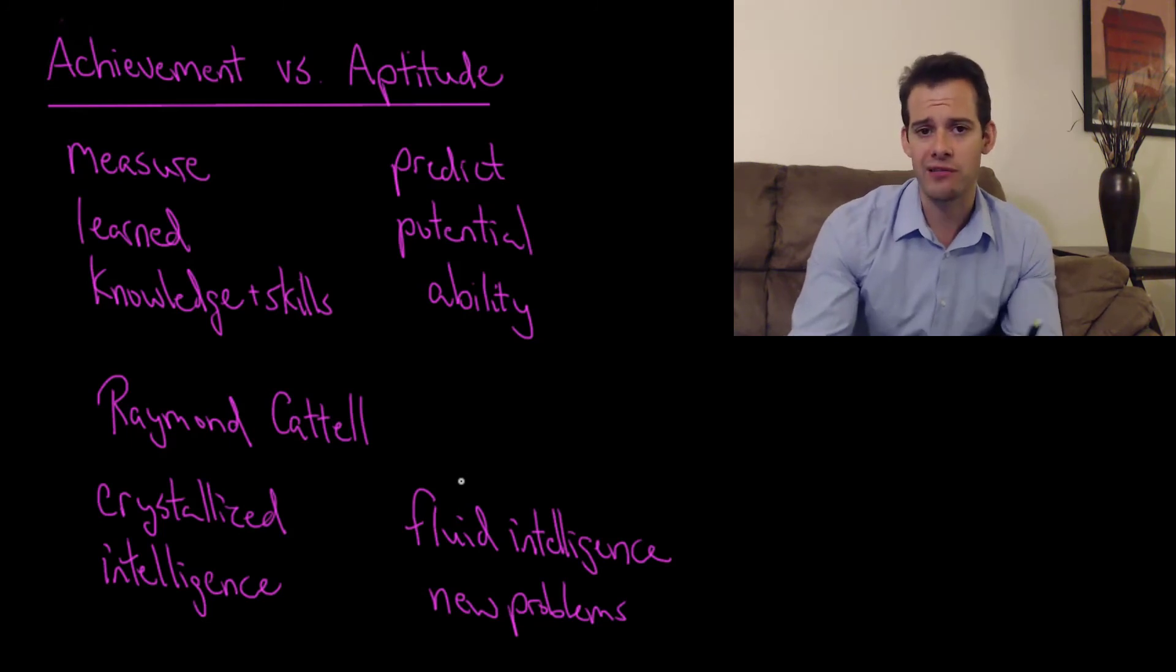So that's one way that you can remember this distinction between crystallized intelligence and fluid intelligence. Now an interesting thing about fluid intelligence is that it peaks around sometime in your 20s and then it declines for the rest of your life. Now you might wonder, that might sound very strange and you might wonder well that doesn't seem to be the case. I mean people who are older do tend to seem, they don't seem like their IQ is dropping.